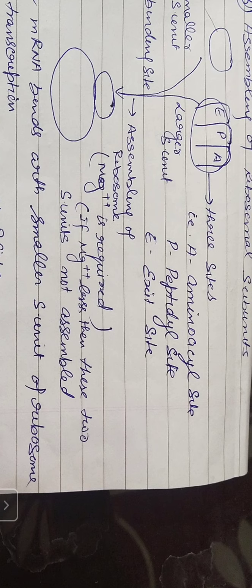The smaller subunit and the larger subunit are assembled together in the presence of magnesium ions. If the concentration of magnesium ions is low, then the two subunits are not able to assemble.